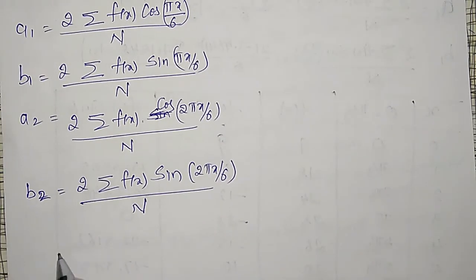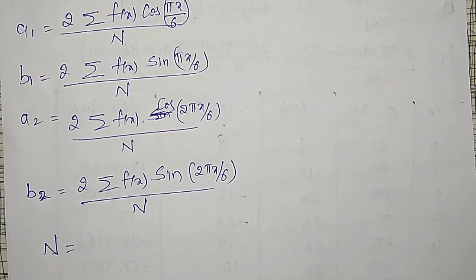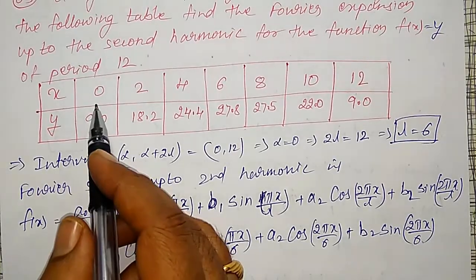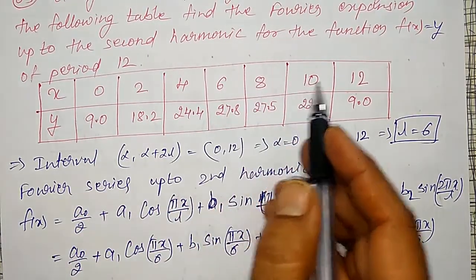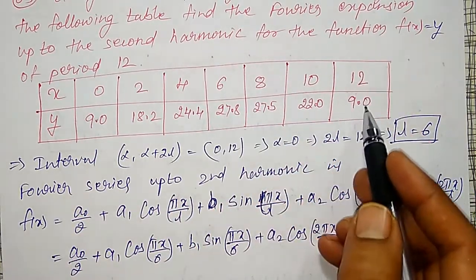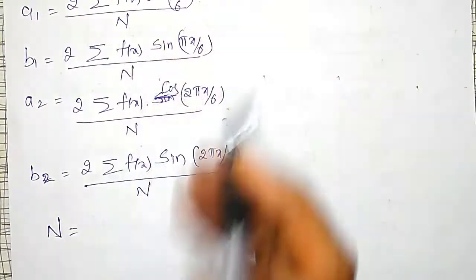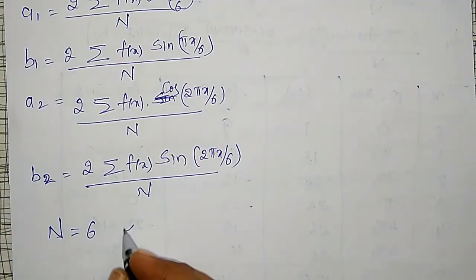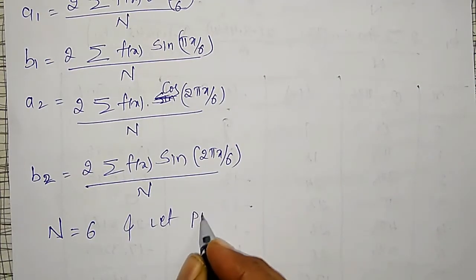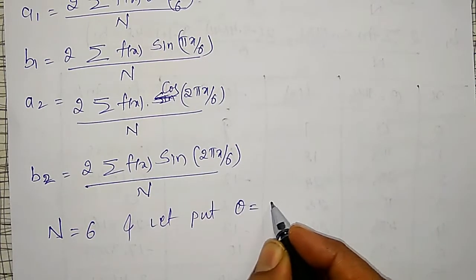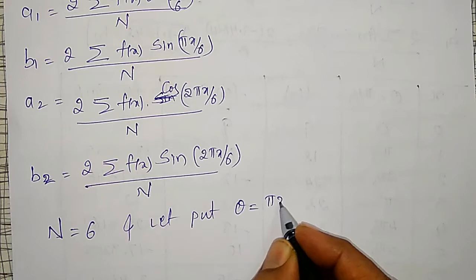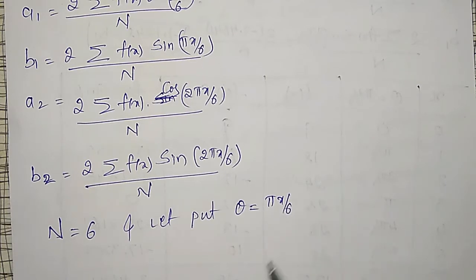The number of observations N is the total number given — counting: 1, 2, 3, 4, 5, 6, 7 — but the 7th value is a repeated value so I am neglecting it. Therefore N equals 6. I will let theta equal pi X / 6, so that the table calculations become easier.